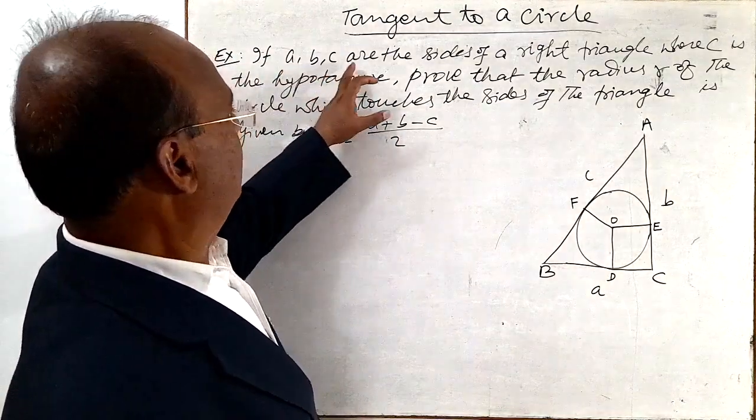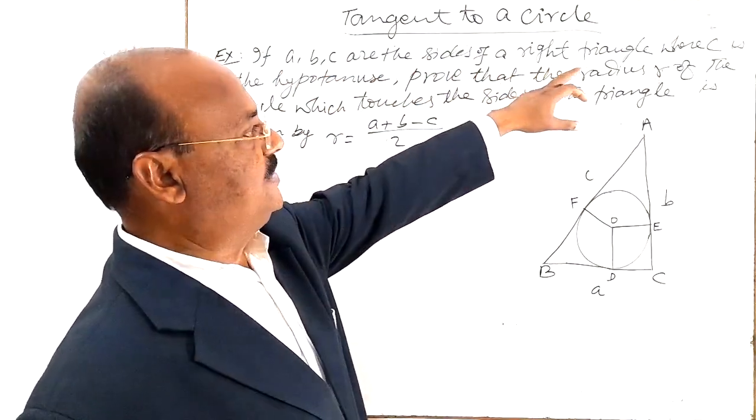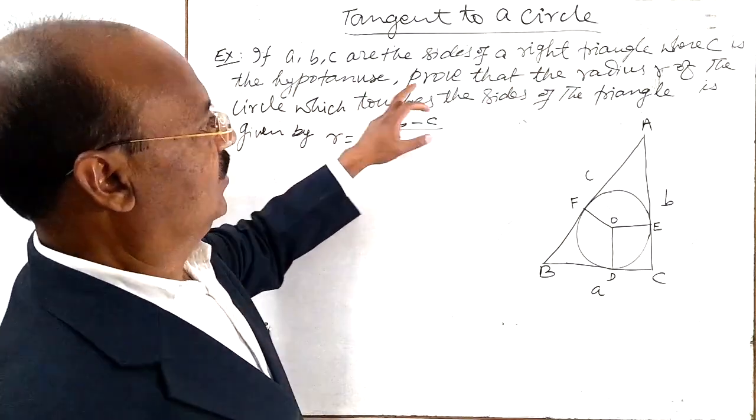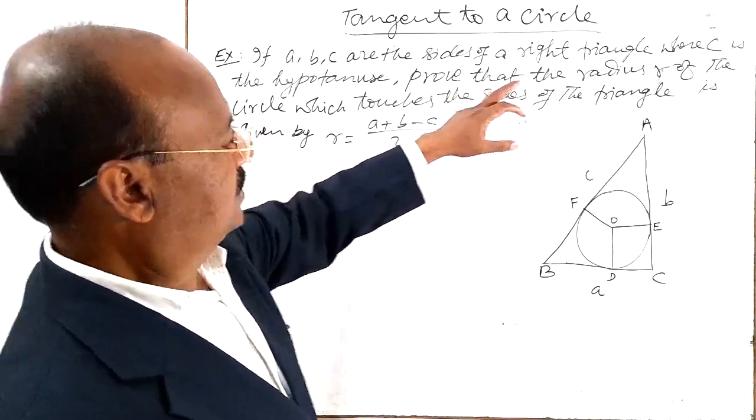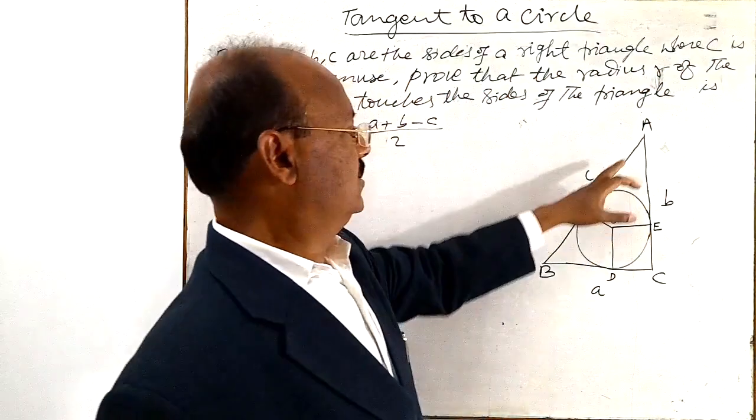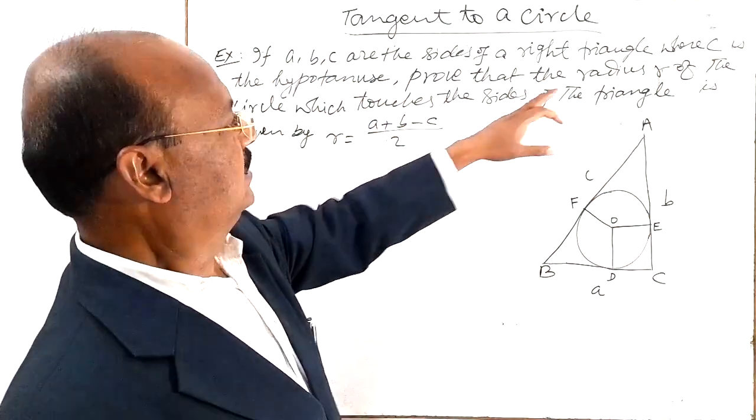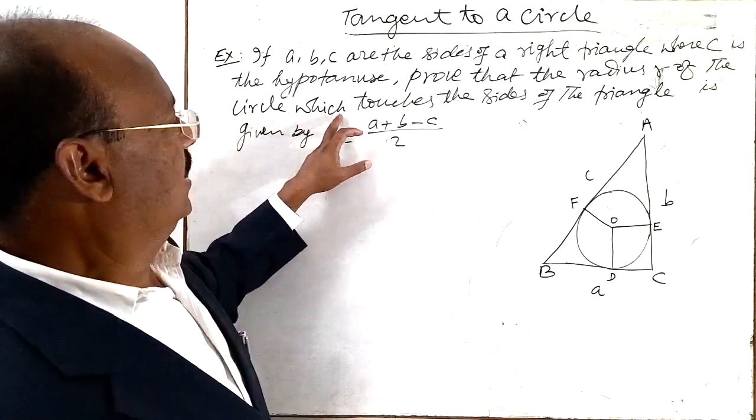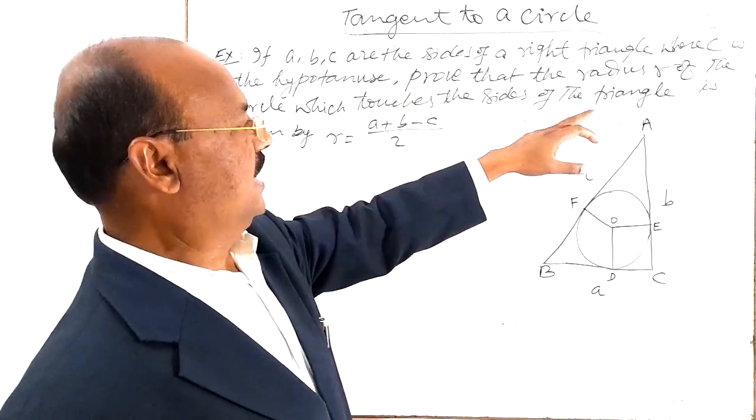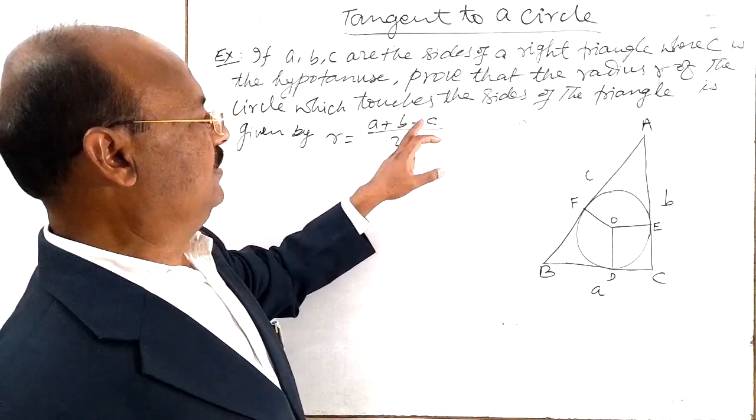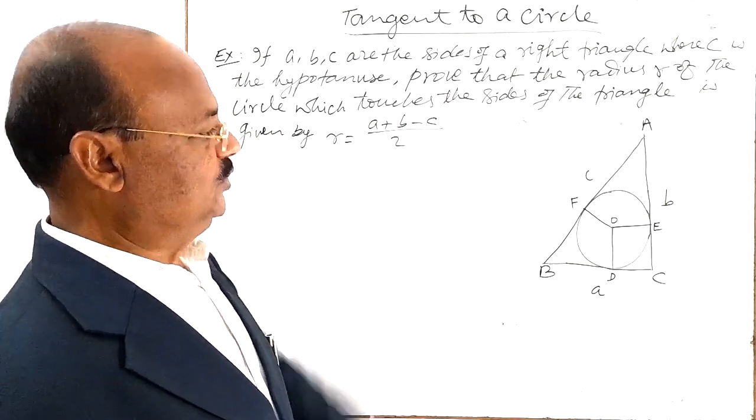The question is if ABC are the sides of a right triangle where C is the hypotenuse. This C means this side C is the hypotenuse. Prove that the radius R of circle which touches the sides of the triangle is given by R is equal to A plus B minus C by 2.